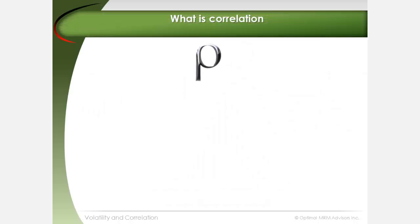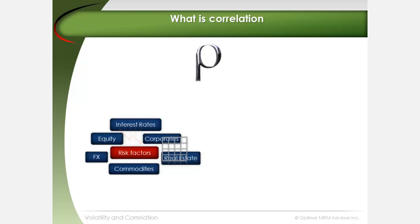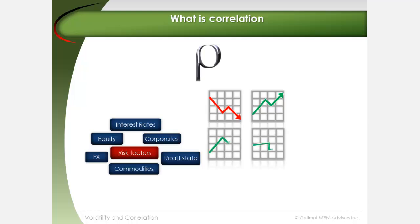Correlation is represented by the Greek symbol rho. It describes the degree to which changes in different risk factors move in the same or opposite direction. Risk factor returns may be negatively correlated to one another, uncorrelated, or positively correlated.